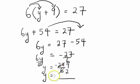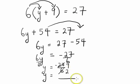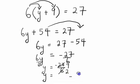So in the end, y equals negative 9 over 2.